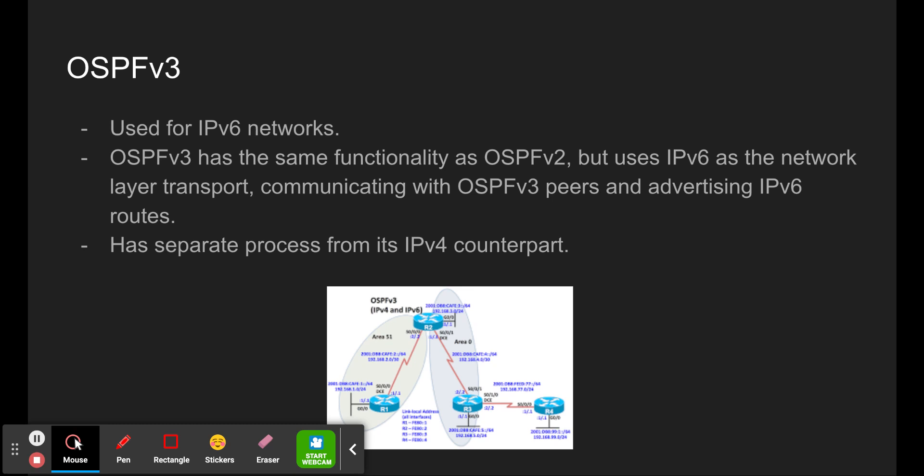OSPFv3 is the OSPFv2 equivalent for exchanging IPv6 prefixes. In IPv6, the network address is referred to as a prefix and the subnet mask is called the prefix length. OSPFv3 exchanges routing information to populate the IPv6 routing table with remote prefixes. OSPFv2 runs over the IPv4 network layer, communicating with IPv4 peers and advertising only IPv4 routes. OSPFv3 has the same functionality but uses IPv6 as the network layer transport, communicating with OSPFv3 peers and advertising IPv6 routes, and also uses the SPF algorithm as its computation engine.